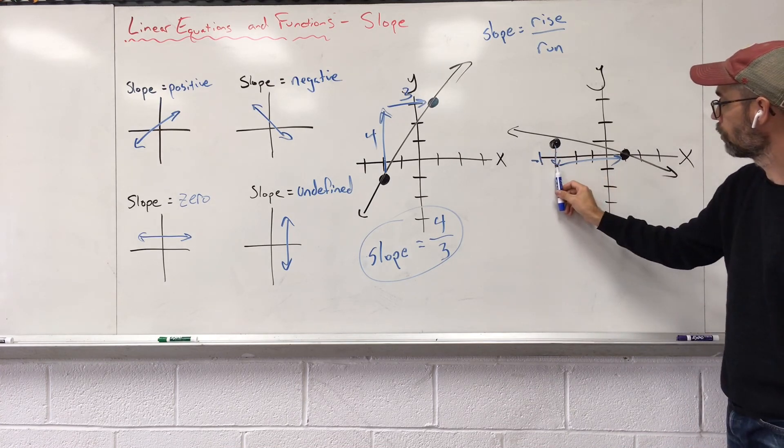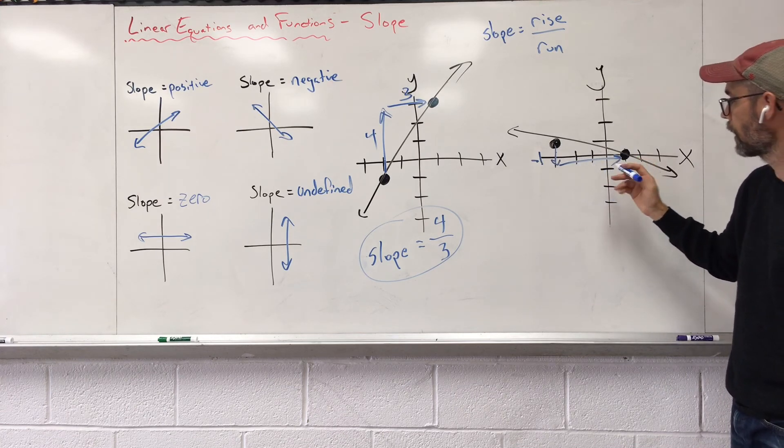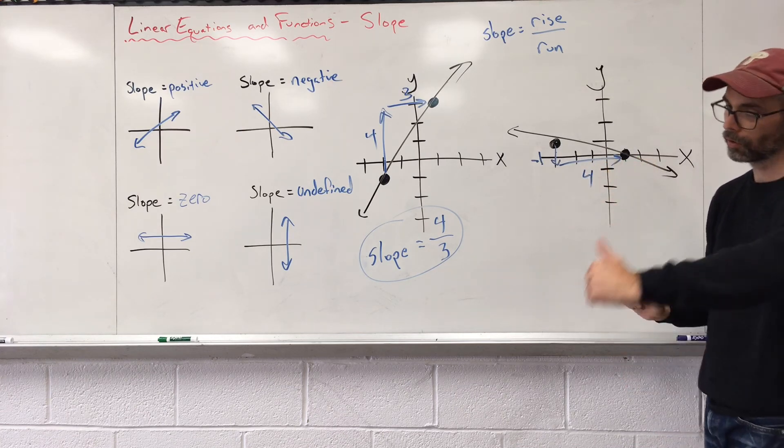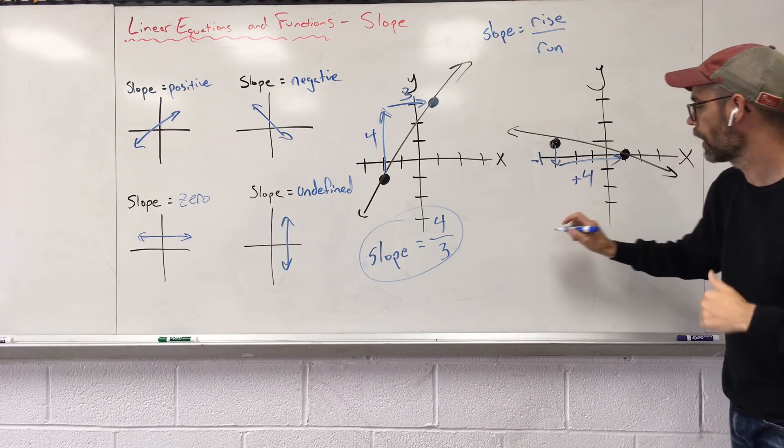How much do we run? We go one, two, three, four steps. We're moving to the right in that positive direction. We're moving positive four, but we don't need to show that.